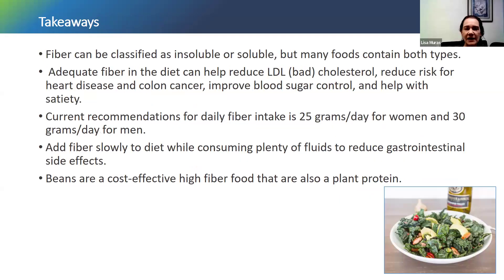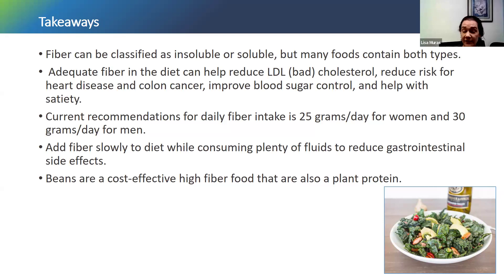Just a few takeaways: we've got two types of fiber — soluble and insoluble — but many foods contain both types. Both are going to have beneficial health effects, and by having a very diverse diet with lots of plant foods, we'll get adequate amounts of all types of fiber. Fiber has lots of benefits — it helps reduce bad cholesterol (LDL), reduces risk of heart disease and colon cancer, helps with improving blood sugar control, and helps with keeping you full. Recommendations are 25 grams per day for women and 30 grams for men. When adding fiber to your diet, do that slowly with lots of fluids to reduce gastrointestinal side effects. And a great cost-effective way to add fiber is more beans — black beans, white beans, lentils — which also provide plant proteins.